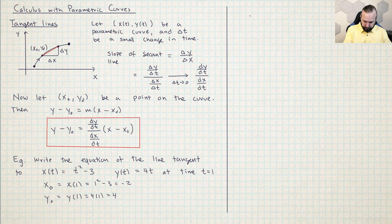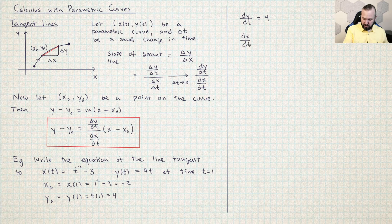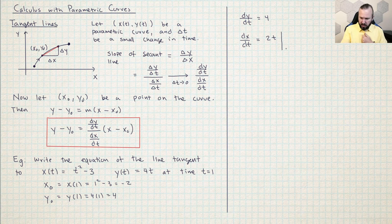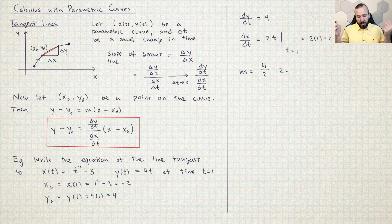Now I need to calculate the slope of the tangent line. dy/dt: remember y is 4t, so dy/dt is just four. And dx/dt: remember x is t² minus 3, so that's 2t. We're evaluating this at t equals one — using the vertical bar notation to indicate plugging in — so dx/dt at t=1 is two times one, which is two. The slope of the tangent line is the y rate of change over the x rate of change: four over two, which is two.